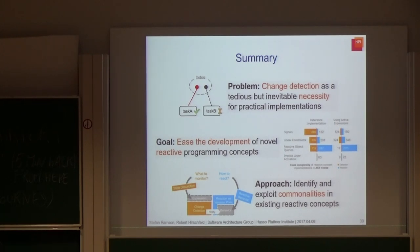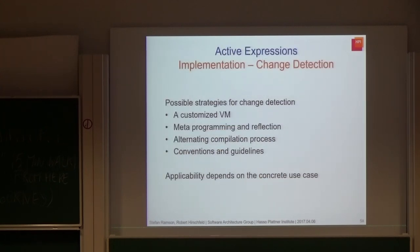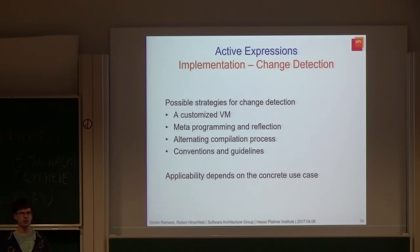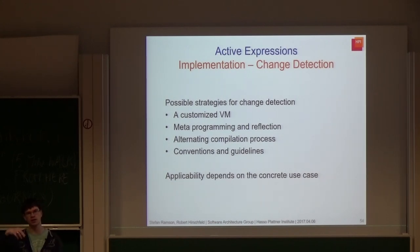Question from the audience: Can you talk about how active expressions are implemented? There are a number of ways — you could use a customized VM, do metaprogramming while altering the compilation process, or simply use conventions and guidelines like explicit lifting. All of those approaches have their strengths and weaknesses. Since we want to provide a base concept and don't know which usage scenario concepts built on top will face, we made the implementation strategy itself a point of variation: when you build on top of active expressions, you can also choose which kind of implementation you would like to use. We implemented our prototype in JavaScript, which means a customized VM is a no-go since JavaScript is intended to run in a variety of clients. For each of the other three mechanisms, we implemented an example.